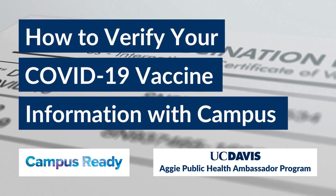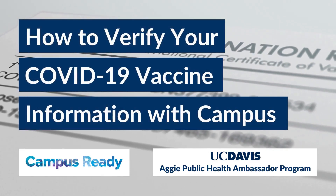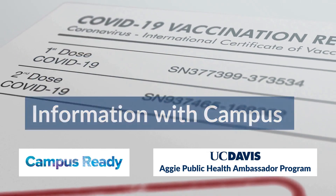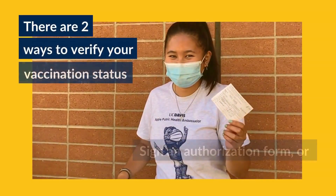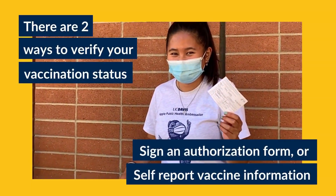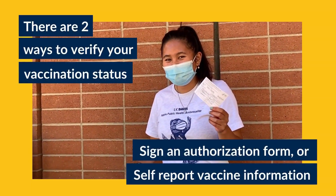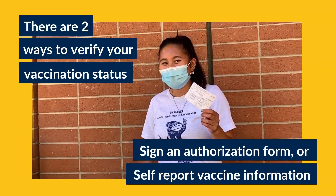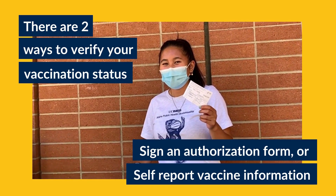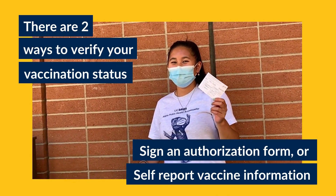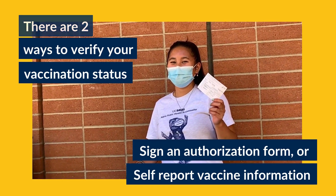How to verify your COVID-19 vaccine information with CAMPBIS. There are two ways to verify your vaccination status: sign an authorization form, or self-report vaccine information.